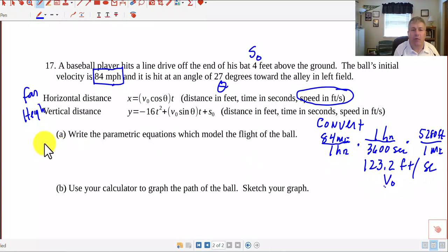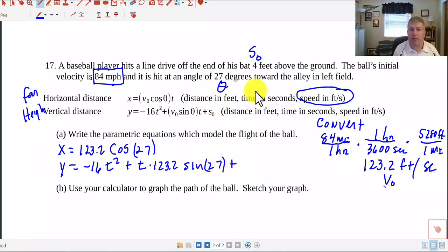So this is our V. And then we're asked to write our parametric equations, which model the flight of the ball. So our X, or our horizontal distance, 123.2 cosine of 27 all that times T. And our Y, negative 16 T squared, plus V sub 0 T. So I'm going to do T times 123.2 sine of 27, plus our S sub 0, our initial height, 4 feet from the ground, so plus 4.